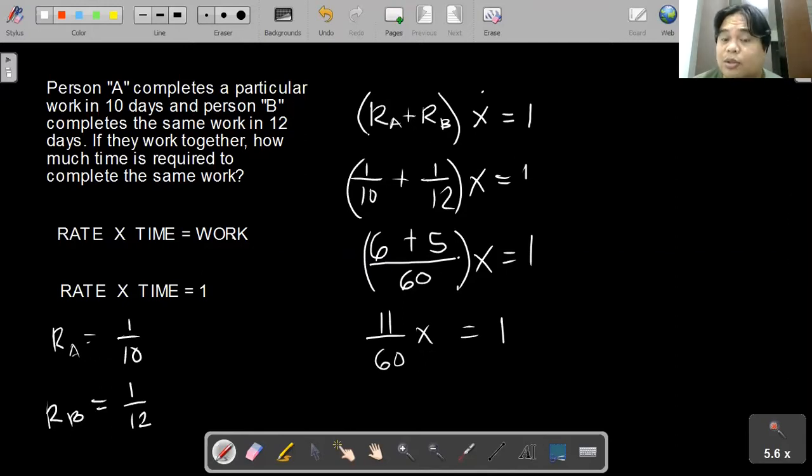We are interested now to solve for X, meaning the time it will take both of them to complete the same job. So we just have to multiply each side by the reciprocal of the coefficient: 60 over 11, 60 over 11. This one cancels out, the 11 cancels out as well. So you will have X equals 60 over 11.